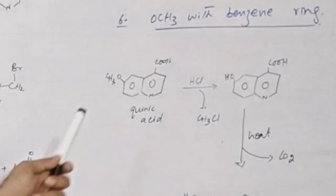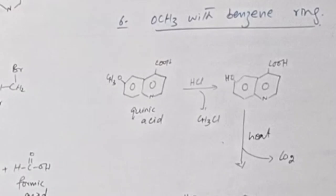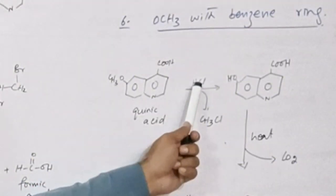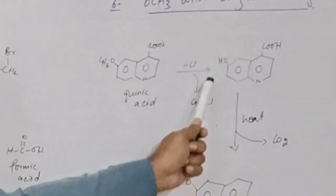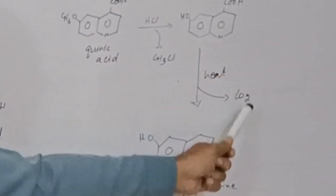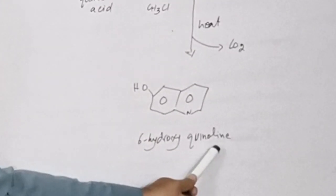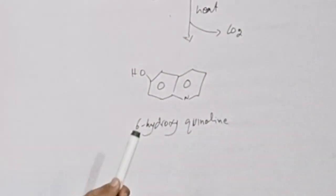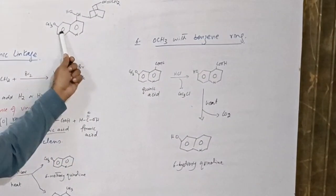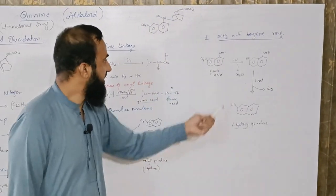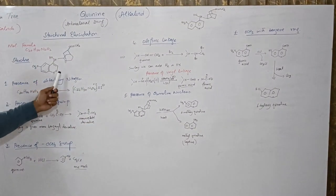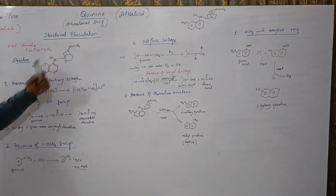To check the position of the methoxy group, we treat the quinic acid formed here — its formula is shown. Quinic acid is treated with HCl; the methyl chloride is removed and a hydroxy derivative is obtained, which is then heated. Carbon dioxide is removed, and we get hydroxyquinoline at the 6th position. This hydroxyl group shows that the methoxy group in the structure is present on the benzene ring. All of these elucidated data confirm that the structure of quinine is as shown. This completes the structural elucidation.